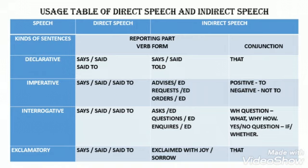For a declarative sentence in direct speech, the reporting part verb forms are 'says,' 'said,' and 'said to.' When converting to indirect speech: 'says' and 'said' remain as 'said'; 'said to' changes to 'told.' The conjunction for the declarative sentence is 'that.'